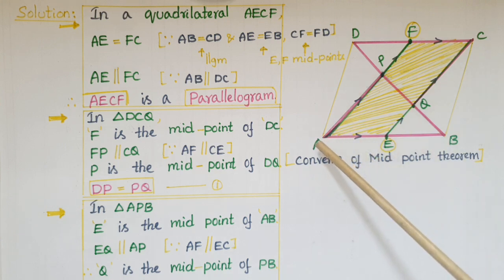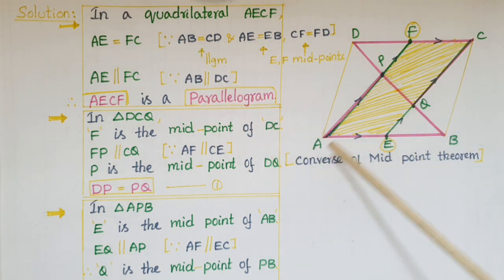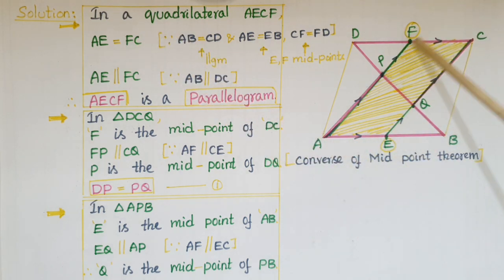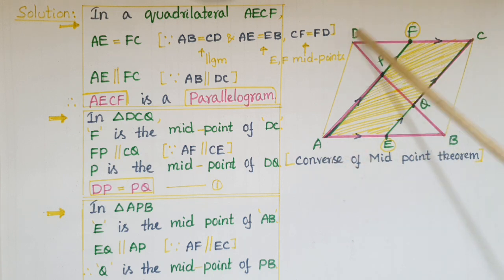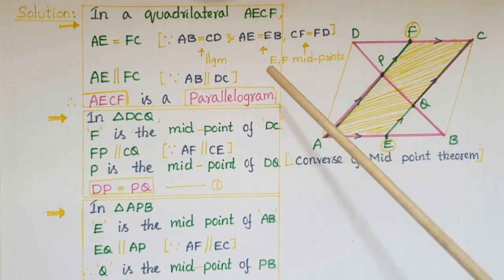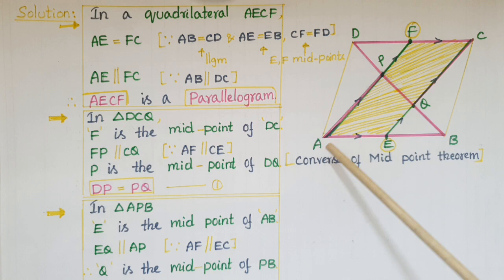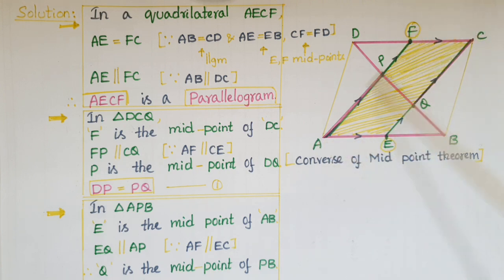So AE is equal to FC, and AE is parallel to FC because AB is parallel to DC in a parallelogram. We know that if one pair of opposite sides is both parallel and equal, then the quadrilateral is a parallelogram. Therefore, AECF is a parallelogram.